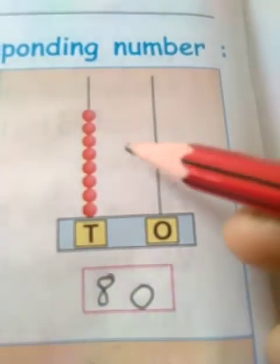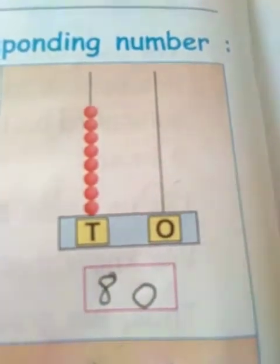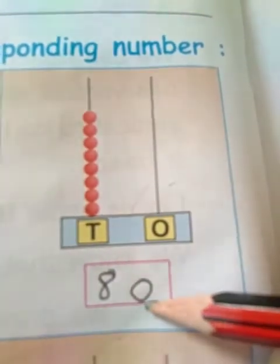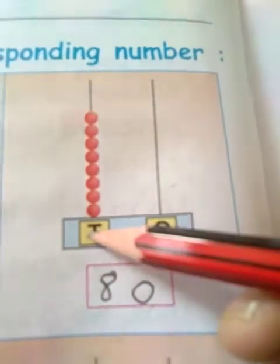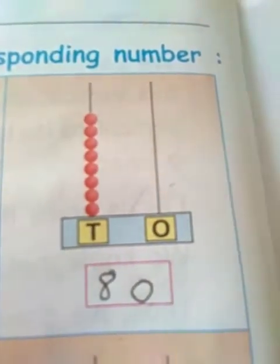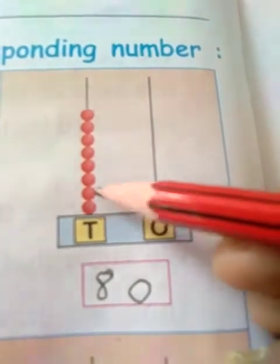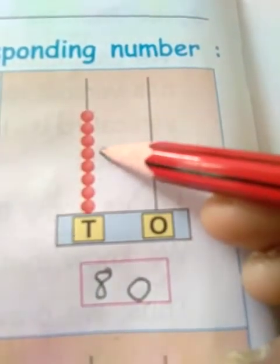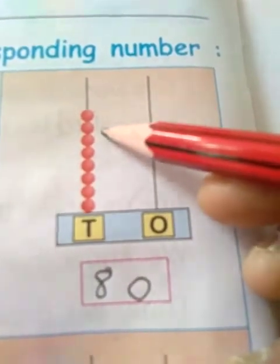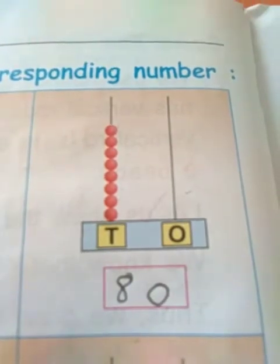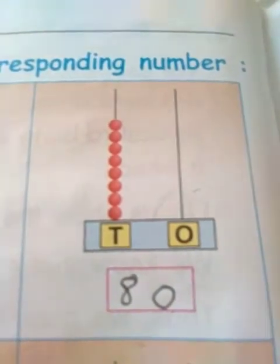See dear students, in the 1's place, nothing is there — nobody is there. So we can write here 0. But in the 10's place, we have beads. How many beads are there? 1, 2, 3, 4, 5, 6, 7, 8. Eight beads are there, so we can write here 8. So 8 and 0 — eighty.